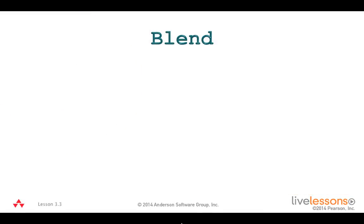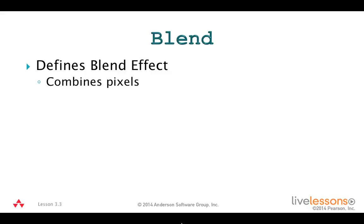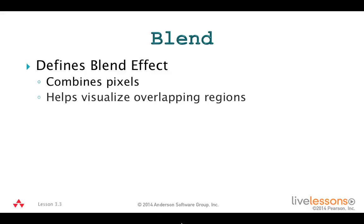Let's begin with the blend effect. Blending combines two colors to produce a new color at a pixel location. Blending is useful for determining what should be seen in a region where nodes overlap or where two effects apply to a node. You can use blending as an effect or a mode that controls drawing overlapping nodes in a group or container.